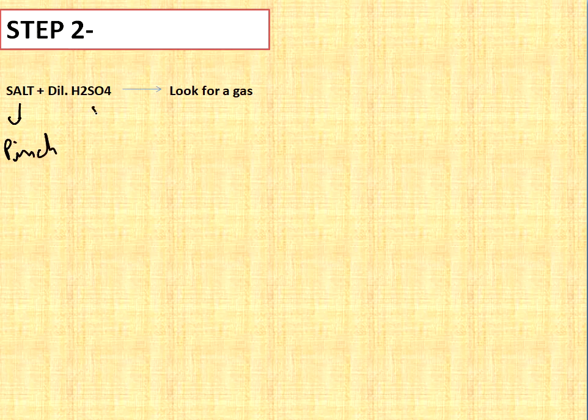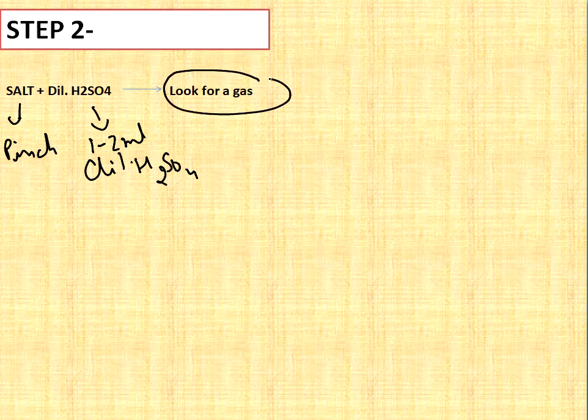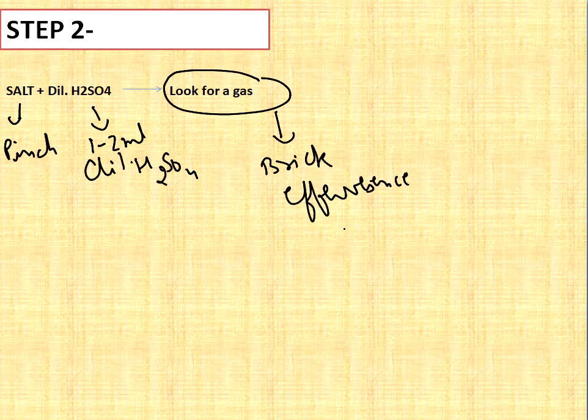Add dilute H2SO4 to a pinch of salt. How much dilute H2SO4 you have to add? You have to add one to two ml H2SO4 dilute. Now after adding dilute H2SO4, you have to look for the gas which is evolving.